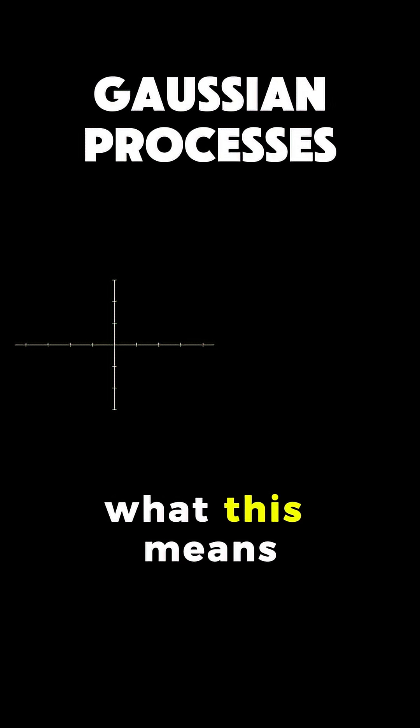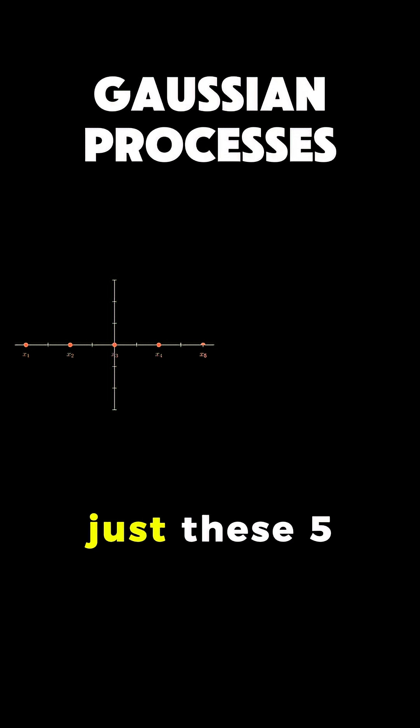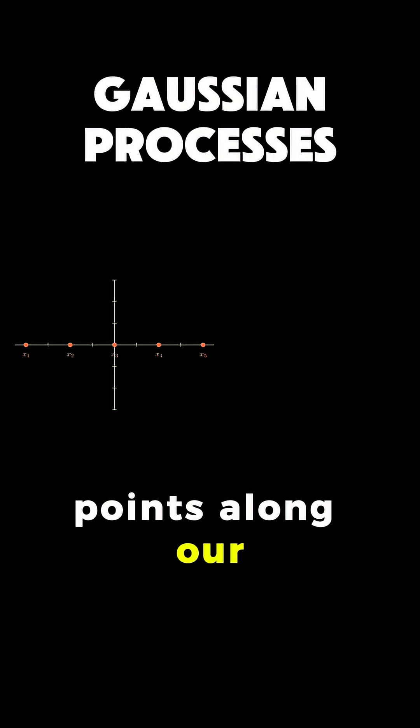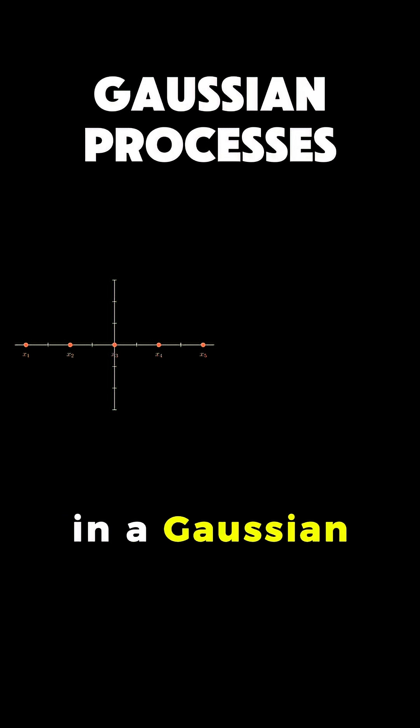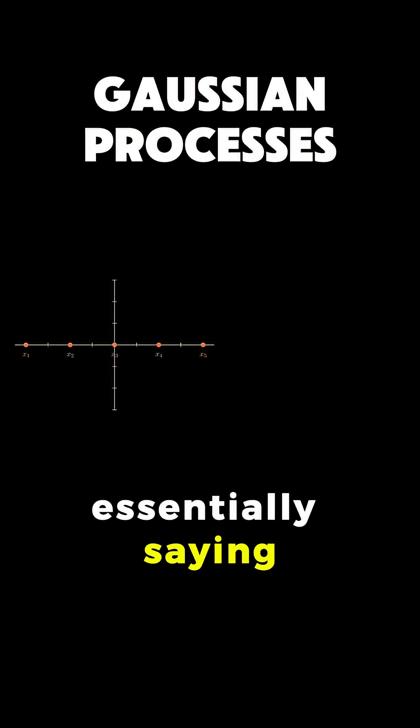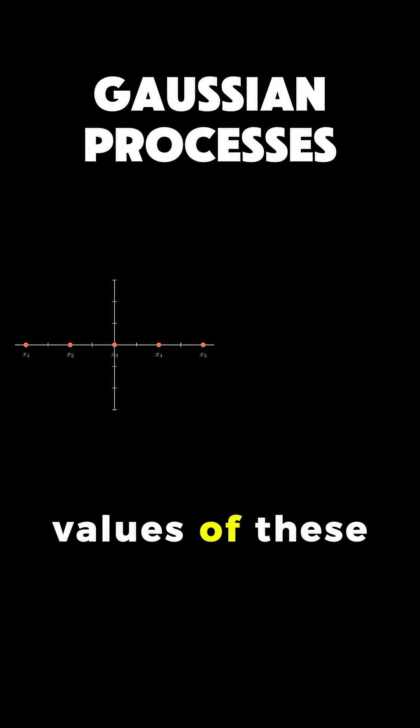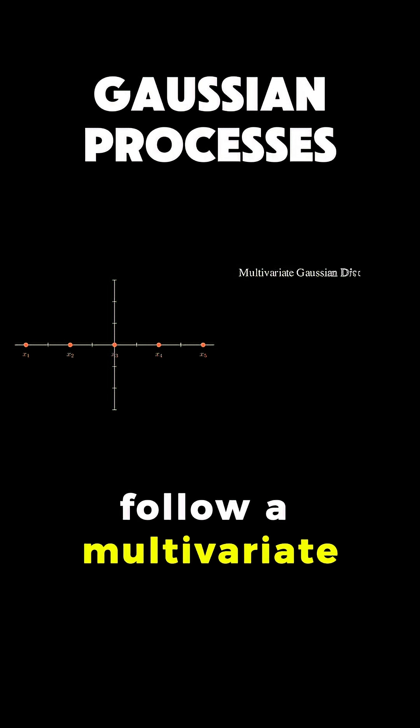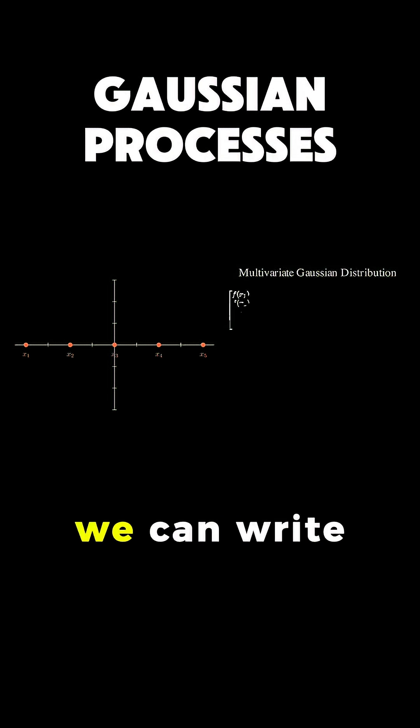Now let's visualize what this means. Imagine we have just these five points along our x-axis. In a Gaussian process, we're essentially saying that the function values at these points follow a multivariate Gaussian distribution. We can write this